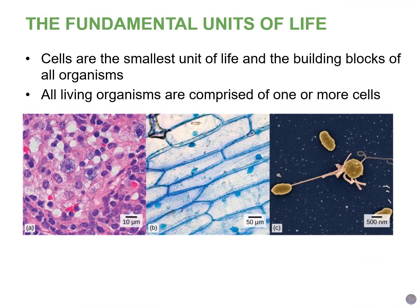As we learned before, cells are the smallest unit of life, and everything that is considered alive is made up of at least one or more cells. Here we have cells from three different types of organisms. On the left we have cells from the human nasal cavity. In the middle we have some plant cells — these are onion cells. And then on the right we have these rod-shaped bacteria known as vibrio.